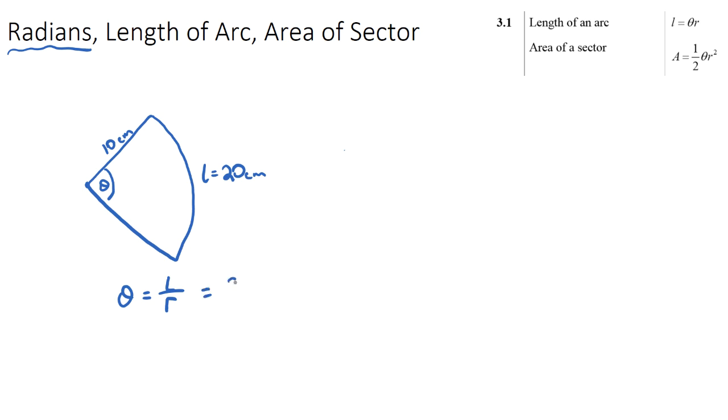If you have a look at the first formula up here, the length of an arc, this is just the same equation slightly rearranged. If we divide the r underneath, theta in radians is just the length over the radius.